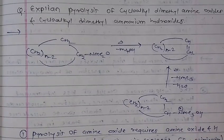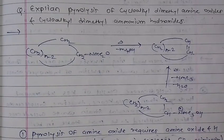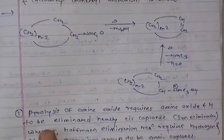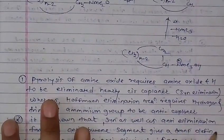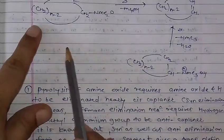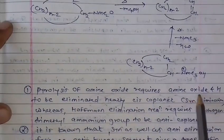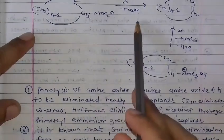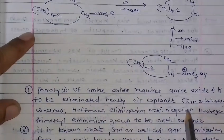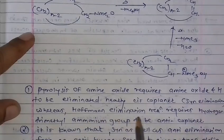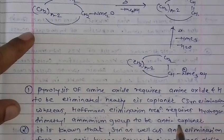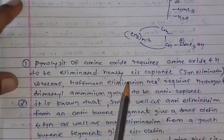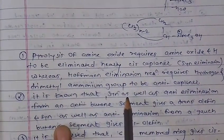It is important to understand whether it is anti-planar or not. The pyrolysis of the amine oxide requires the amine oxide and the hydrogen to be eliminated to be nearly cis-coplanar, so it is called syn elimination, whereas the Hofmann elimination reaction requires the hydrogen and trimethylammonium group to be anti-coplanar.